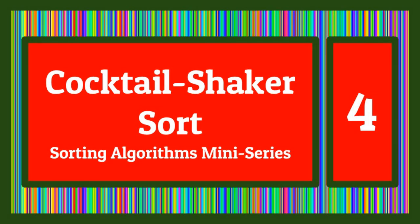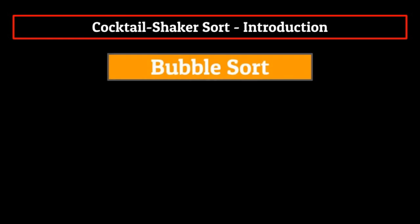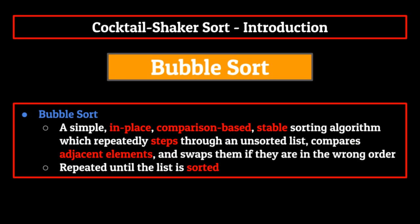Hello everyone, and welcome back to our series on sorting algorithms. Last time we talked about bubble sort, a simple, comparison-based, stable algorithm which repeatedly steps through an unsorted list, compares adjacent elements, and swaps them if they are in the wrong order. I highly recommend you watch our episode on bubble sort before today's lecture, as our next algorithm builds off a lot of the information covered in that video.